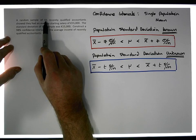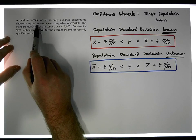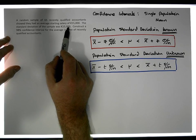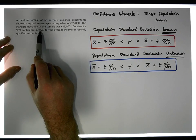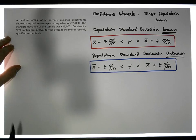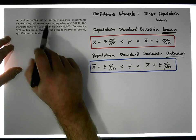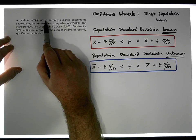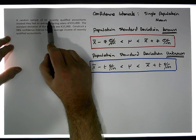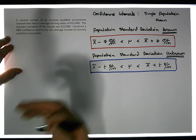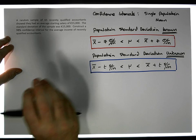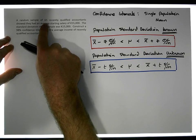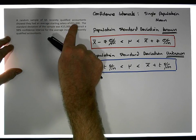A random sample of 65 recently qualified accountants showed they had an average starting salary of €55,000. The standard deviation of the sample was €15,000. We're being asked to construct a 98% confidence interval for the average income of recently qualified accountants. This sample of 65 has been taken from a population of recently qualified accountants. The population has its own average starting salary, but we don't know that because we haven't got access to the population.